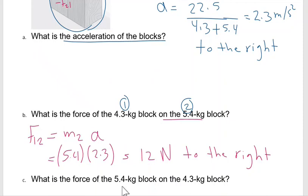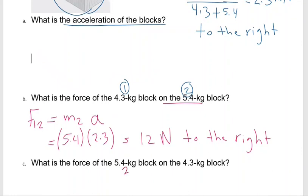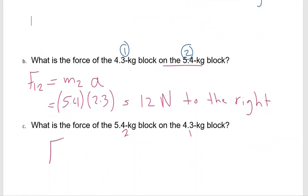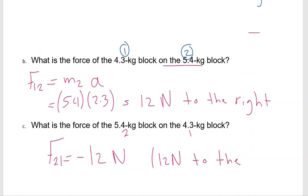F1 on M2 equals M2 times acceleration = 5.4 × 2.3 = 12 N to the right. By Newton's third law, the force of the 5.4 kg block on the 4.3 kg block is equal and opposite: 12 N to the left (negative direction).